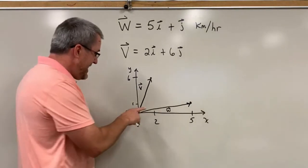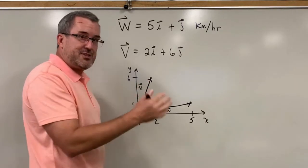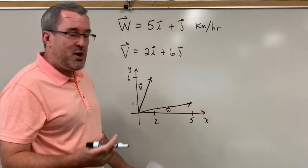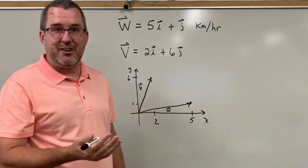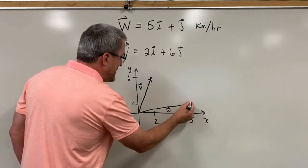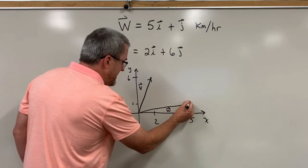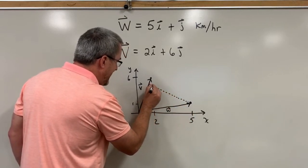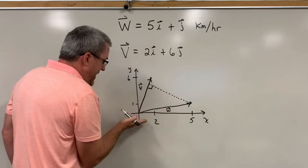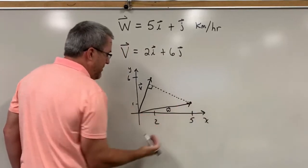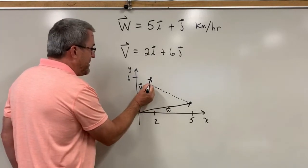But the question is this: how much of this wind vector is in the direction of the people running? Here's how we find out. We do something called a projection. We project this wind vector onto this direction vector. The projection is such that we're going to project it perpendicularly. So can you imagine taking this wind vector and projecting it perpendicular?